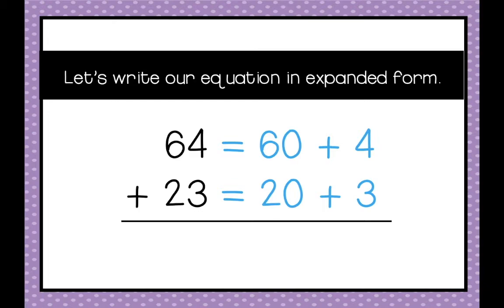Now we're going to write our equation in expanded form. So 64 is 60 plus 4 and 23 is 20 plus 3.